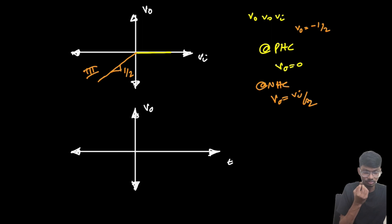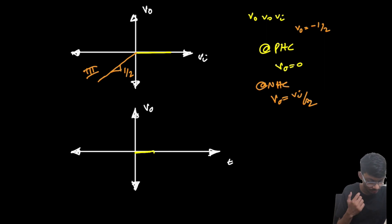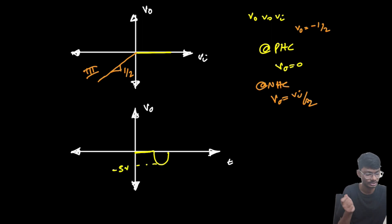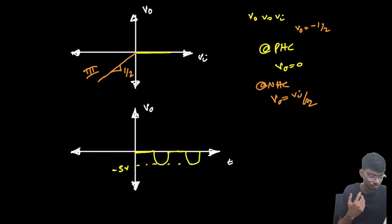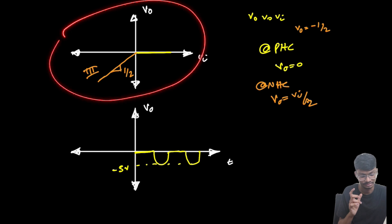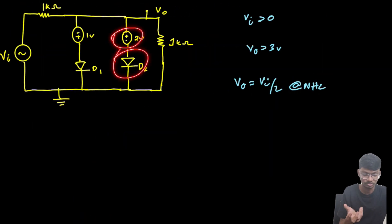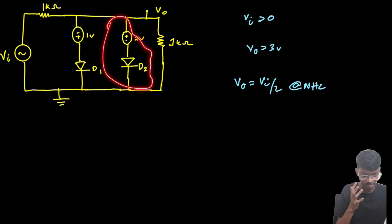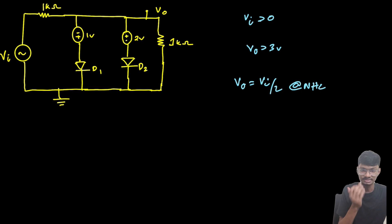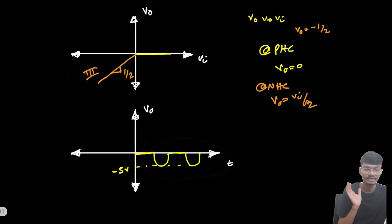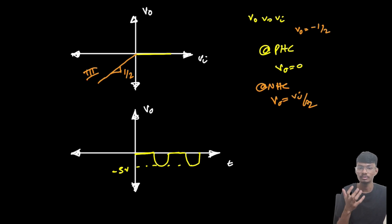The time response of the output voltage: during the positive half cycle it is 0, and during the negative half cycle it is a sine wave with amplitude minus 5 volts, since we are halving the input amplitude of 10. Then again 0, then again minus 5. This circuit clips the positive portion and passes only the negative portion halved. Thank you for watching — if this helped clarify your concept, please like the video.